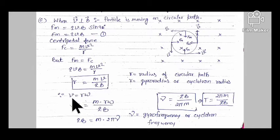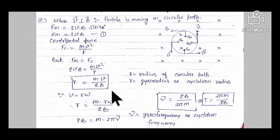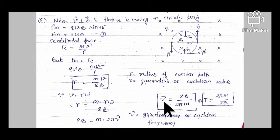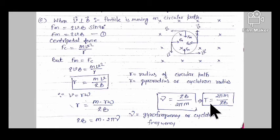Since V = rω, substituting gives QB = mω = m·2πν. Therefore cyclotron frequency ν = QB/(2πm) — also called gyrofrequency. The radius R is also called gyro radius or cyclotron radius. Time period T = 1/ν = 2πm/(QB).